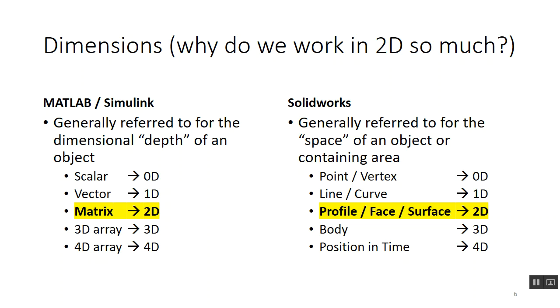Profiles, faces, and surfaces are two-dimensional. Three-dimensional objects are bodies, and positions and time of those bodies you can think of as four-dimensional. Two-dimensional and four-dimensional are kind of special dimensions in topology. When you get into SOLIDWORKS you'll find you spend most of your time either in 2D sketches or mating parts in 3D — that's just a little bit of crossover.